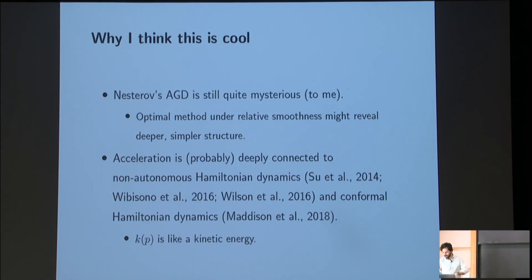OK, so in the last minute, why do I think this is cool? Nesterov's accelerated gradient descent is still quite mysterious, at least to me. There's been sort of other lines of inquiry looking at their sort of continuous time interpretation of the method, trying to sort of shed light on this algorithm. And my hope is that if we could find an optimal method under relative smoothness conditions, this might reveal a sort of deeper and simpler structure to the basic algorithm of acceleration.